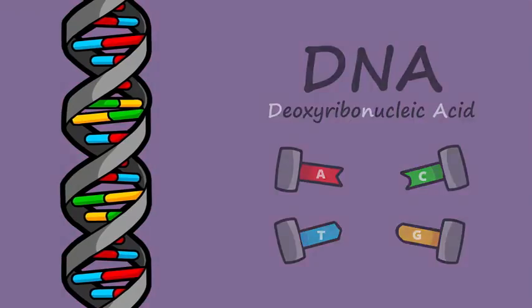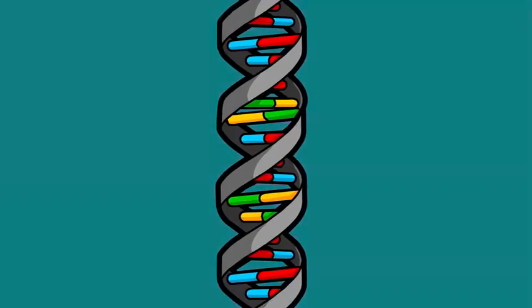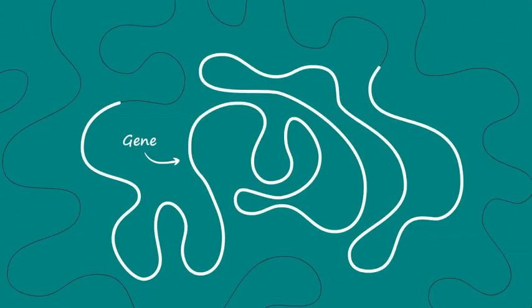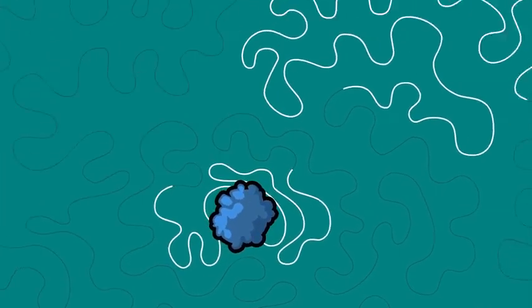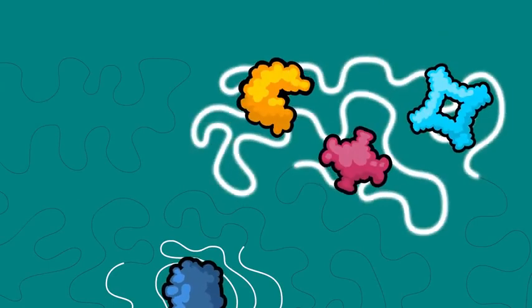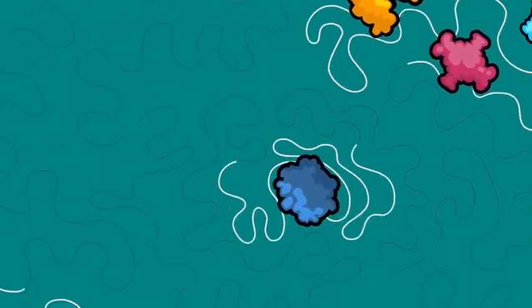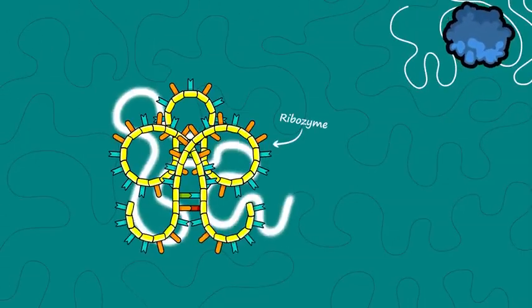We also learned that a gene is a long stretch of DNA — a specific sequence of As, Cs, Ts, and Gs that codes for something. What does a gene code for? Usually a protein or a group of proteins, though there are a few exceptions.